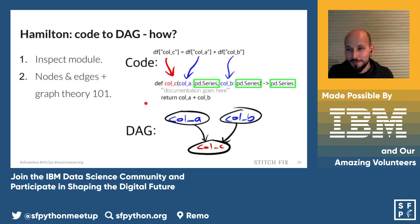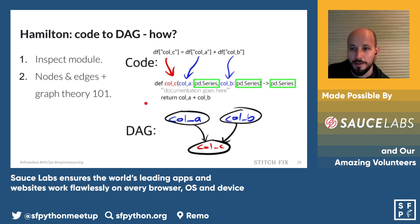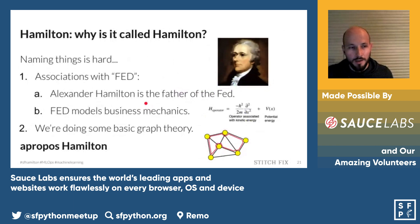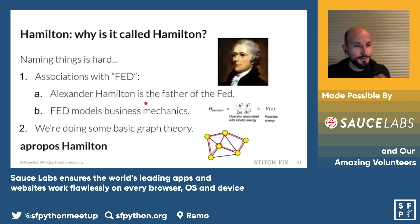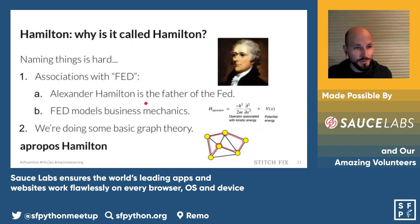Going from a function to a DAG is straightforward — Python's inspect module is great for introspecting things, and then it's graph theory 101: creating nodes and edges and walking the DAG to create a data frame. As for why it's called Hamilton — naming being one of the hardest things in computer science — the FED team stands for Forecasting Estimation and Demand. Alexander Hamilton was the father of the Fed, also the subject of the musical. The FED team models business mechanics, and there are Hamiltonian concepts in graph theory, hence the name.